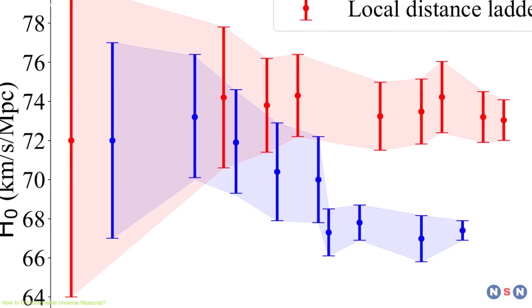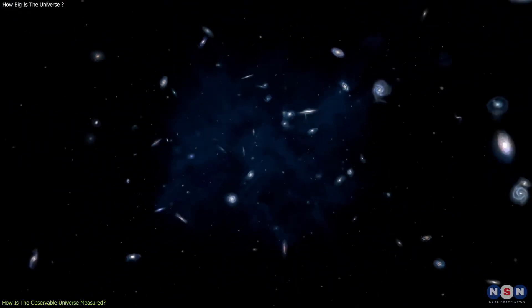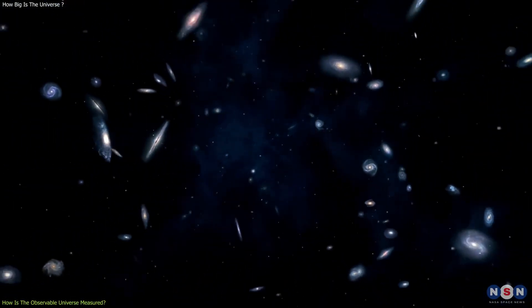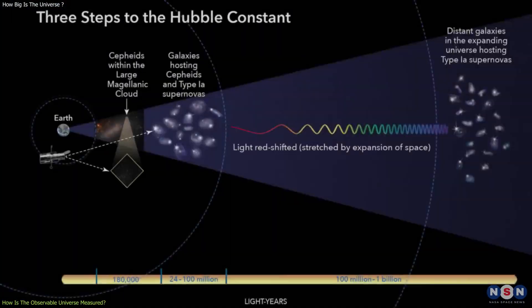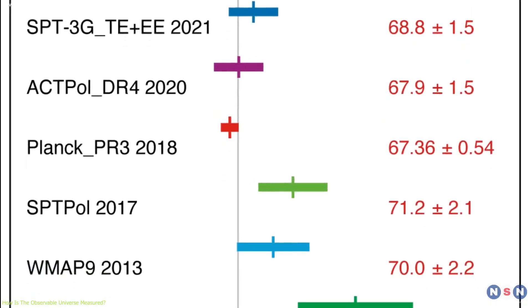Now, you might think that measuring the Hubble Constant is easy, since we can just observe how fast the galaxies are receding from us. But it is not that simple, because there are different methods to measure the Hubble Constant, and they do not always agree with each other.